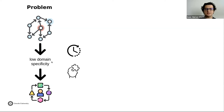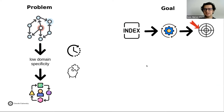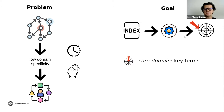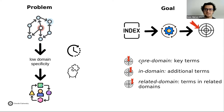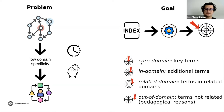Identifying domain specificity information is a time-consuming and complex task. So the goal for this research has been to automatically analyze index terms to identify their relevance according to the domain of the textbook. For this, we want to classify each index term into one of four possible labels: 'core domain' to identify key terms, 'in-domain' for additional terms that belong to the domain, 'related domain' for terms that belong to related domains, and 'out of domain' for terms that don't belong to the domain — for example, terms used for pedagogical reasons. Usually this classification is binary, but in our case we use four different labels.